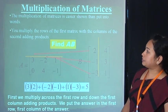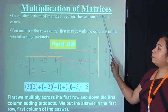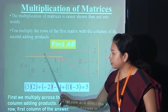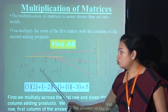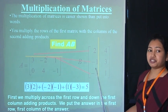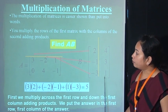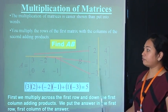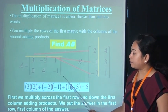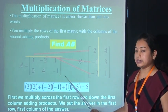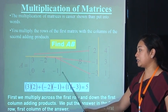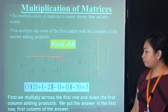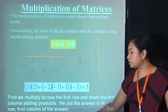The multiplication of matrices is easier shown than put in words. You multiply the row of the first matrix by the first column of the second, adding the products. This matrix has order 2×3 — two rows and three columns — and this matrix has order 3×2 — three rows and two columns. The number of columns of the first (3) equals the number of rows of the second (3), so we can multiply. First, multiply across the first row down the first column and put the answer in the first row, first column of the result.